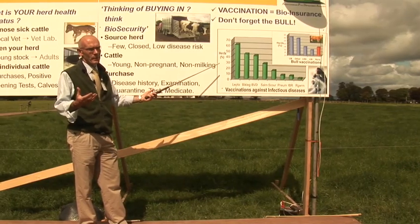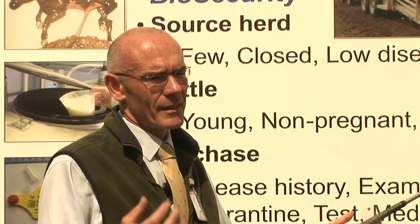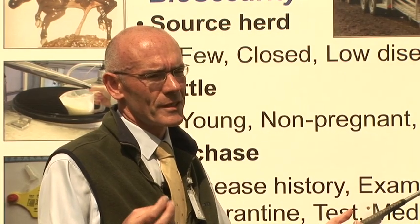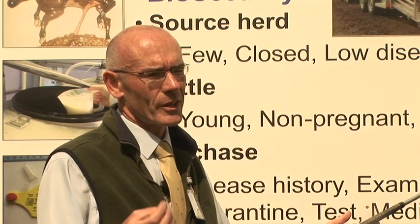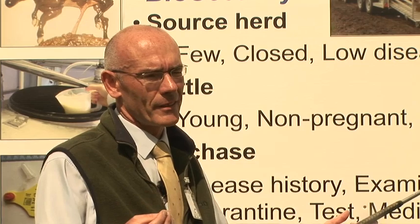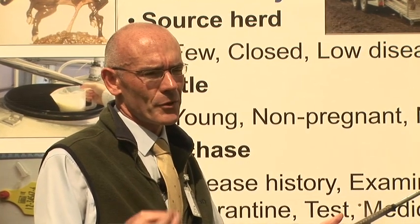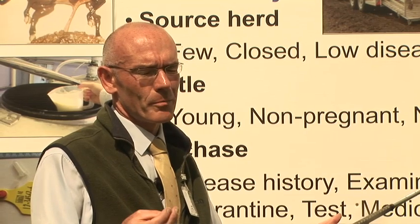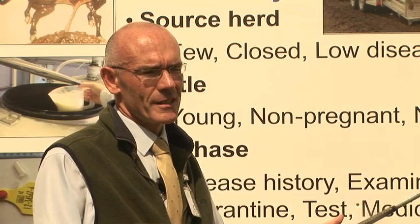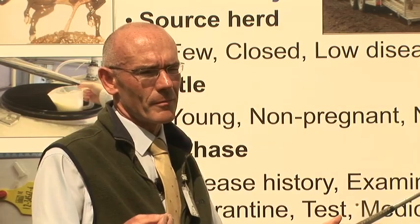In summary, there are three take-home messages. The first one is: expansion will increase the risk of disease spread. You can reduce these risks by having a herd health plan. There are three components to the plan: the first one is know your herd health status, the second one is don't buy in disease, and the third one is prevent disease spread on your farm. Thank you.